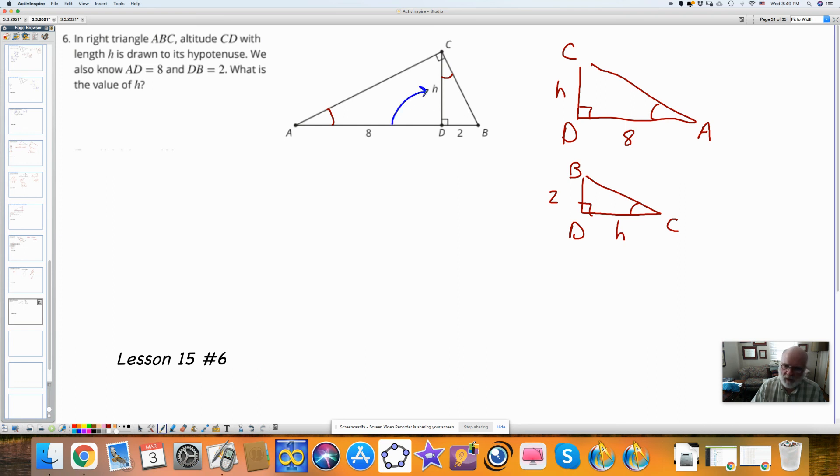Maybe you noticed this middle line is a geometric mean, so 8 is to H as H is to 2. I could also look at this 8 is to H as H is to 2. When it's a geometric mean, the means are the same value. H squared is equal to 16. H is equal to 4.